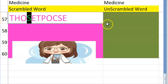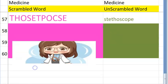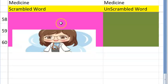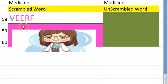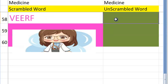Last four — the fifty-seventh one is an instrument, starts with S — doctors use it to hear heart sounds and respiratory sounds during auscultation — it is stethoscope. The fifty-eighth one is a common symptom that people come with, starts with F — fever.